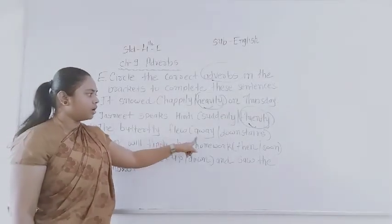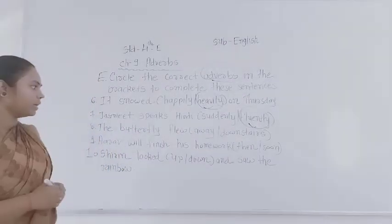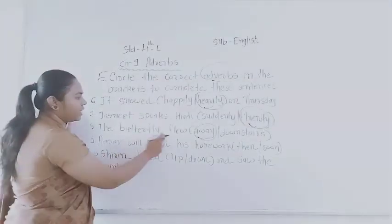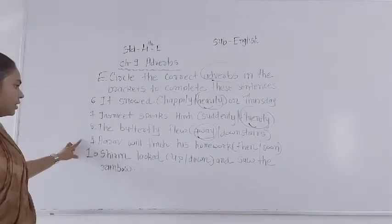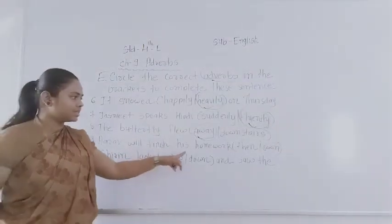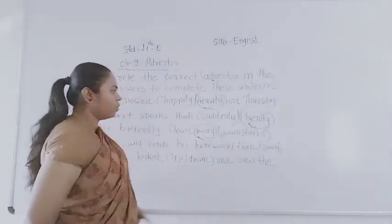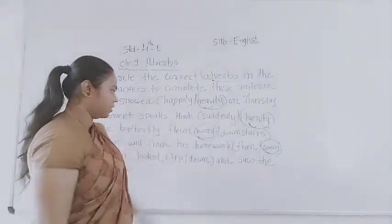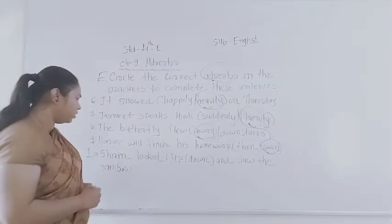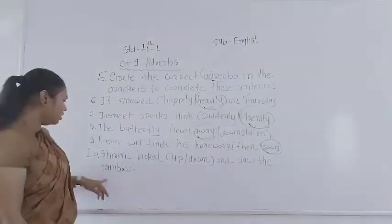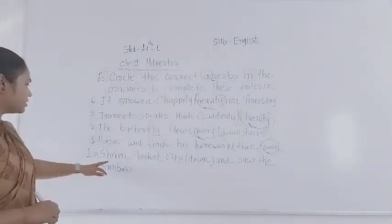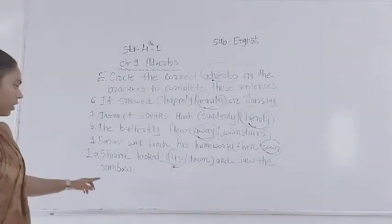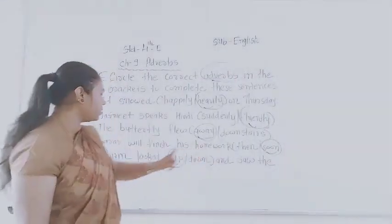Eighth one: The butterfly flew away. The answer is 'away.' Ninth one: Arrow will finish his homework soon. The answer is 'soon.' Tenth one: Serene looked up and saw the ring. The answer is 'up.'